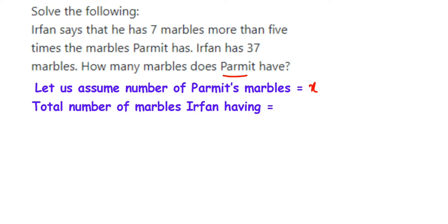Here they have given relationship between the number of marbles Parmit and Irfan are having. What is that relationship? Irfan says he has 7 marbles more. 7 marbles more means addition. So 7 plus, let me form an equation.